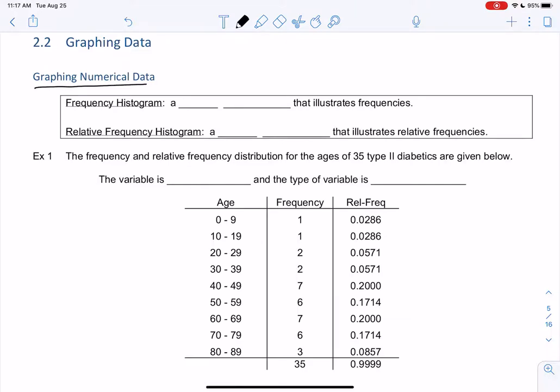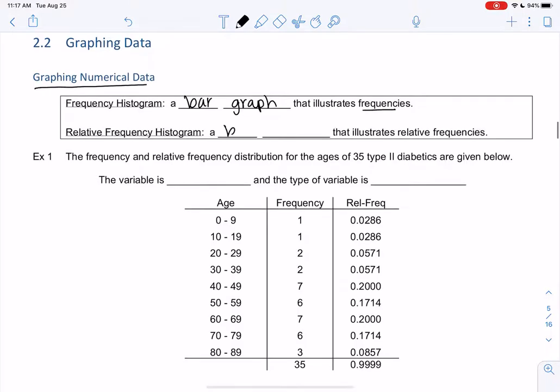It sounds scary but you've probably seen a histogram before. It's actually just a bar graph with a fancy name. So a frequency histogram is a bar graph that illustrates frequencies, and then other times we like relative frequency. It's also a bar graph that'll just have relative frequency instead. So we'll see both of those below.